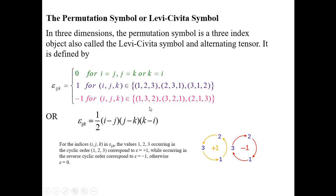Epsilon_ijk can also be defined by the formula: epsilon_ijk = (1/2)(i - j)(j - k)(k - i). You can verify this: if you substitute the first ordered triplet i=1, j=2, k=3, you get the value +1. Similarly, if you substitute an anti-cyclic ordered triplet, you get -1. These are two ways to define epsilon_ijk — using cyclic and anti-cyclic order.